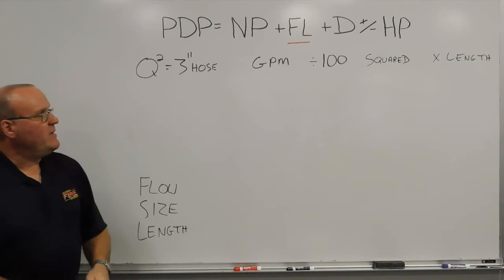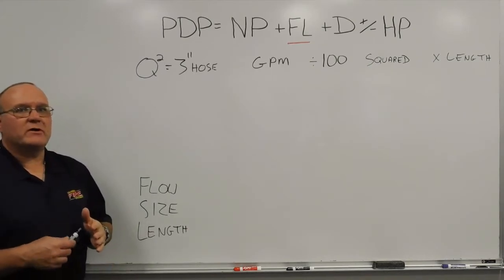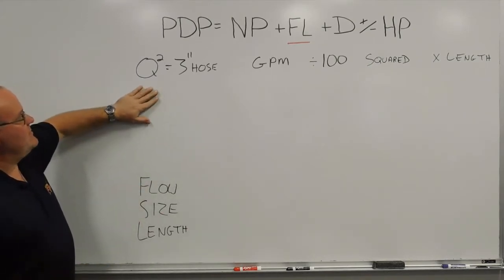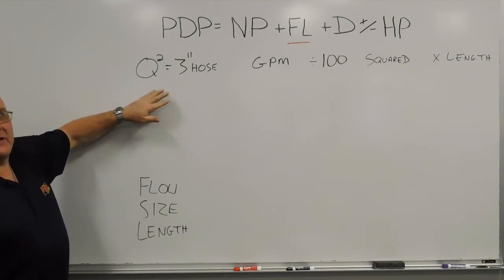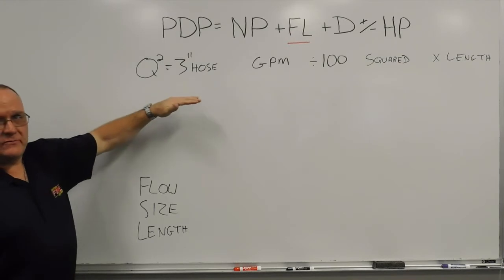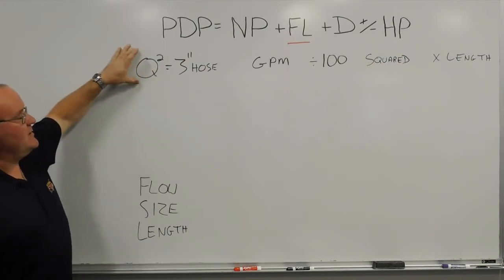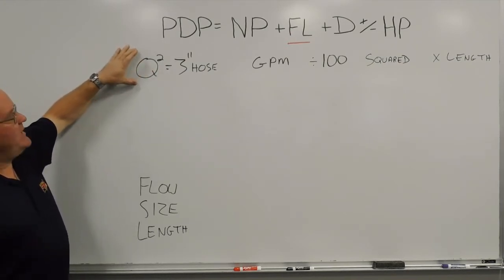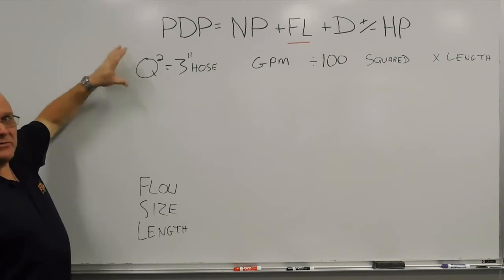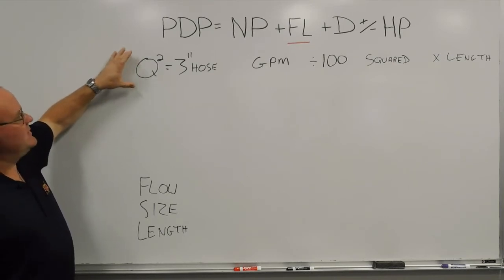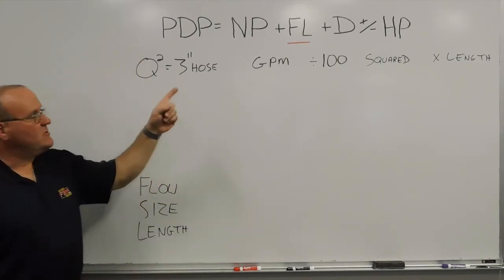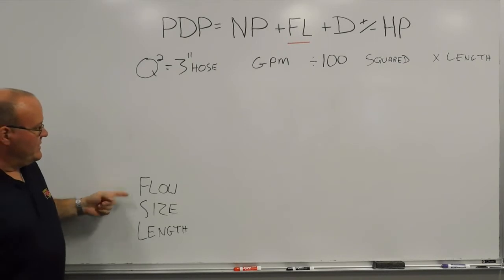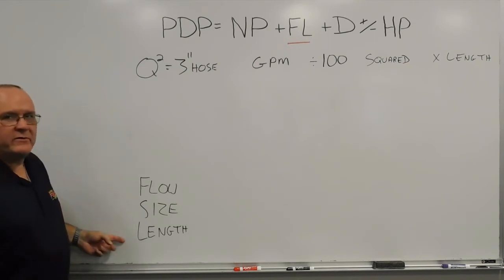We're going to be talking about the HAM method, or the Q-squared method. The Q-squared method that we use to calculate friction loss starts with 3-inch hose as the baseline. From there we can convert using a couple other techniques. When figuring friction loss, we always want to account for the flow, the size, and the length of hose.